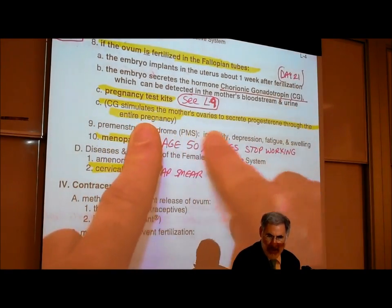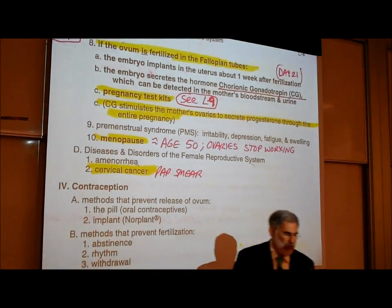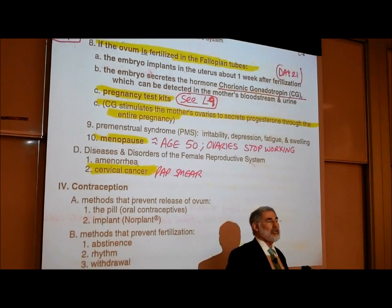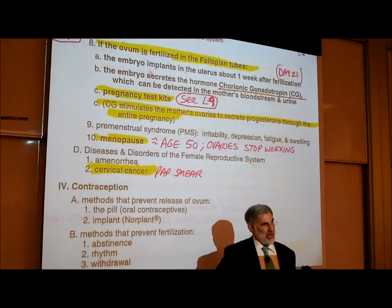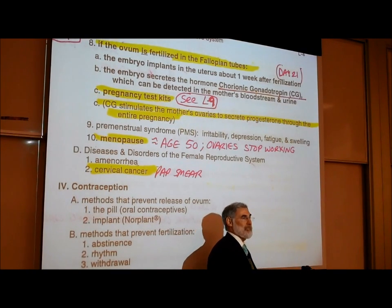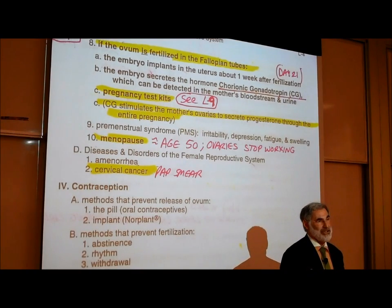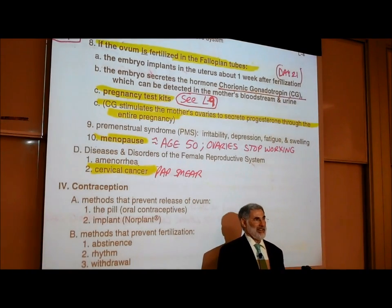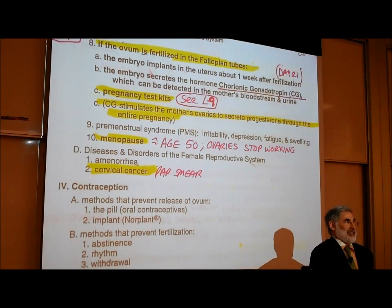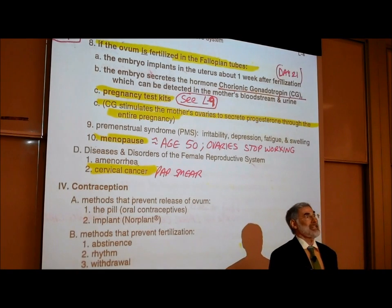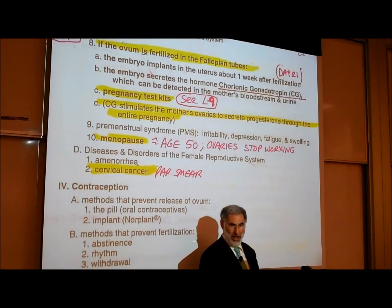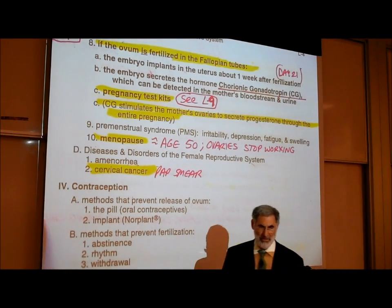The reason why a pregnant woman first notices she's not having a period is because chorionic gonadotropin is controlling her ovaries, causing them to keep secreting progesterone, so the endometrial lining is maintained and not shed. Her womb is not crying. After she does the pregnancy test, she may start to cry — but her womb is not.